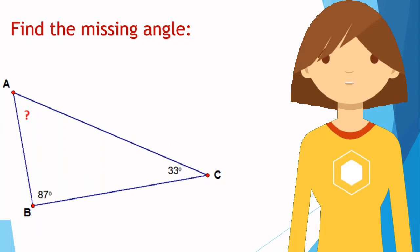Let's find the missing angle of this triangle. We have already learned that the sum of all the angles of a triangle equals 180 degrees.